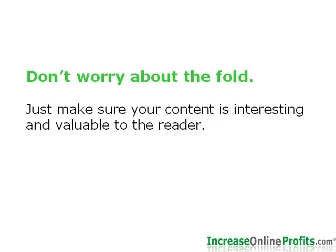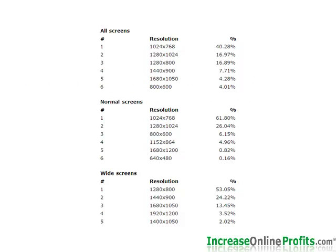What's the most common screen resolution? A study by Onestat.com shows that as of September 30, 2008, 40% of all computer screens worldwide were using a screen resolution of 1024x768. If you look at just normal screens as opposed to wide screens, that percentage increases to almost 62%. The lowest resolution in their study, 640x480, accounts for only 1.6% of all screens, while 800x600 pixels accounts for just 4% of all screens.